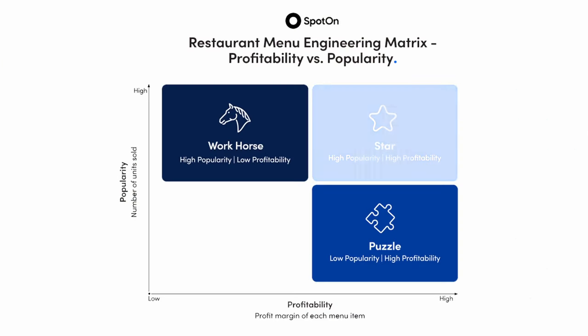And then lastly, don't put more than seven items in any category. Seven is at the high end, but anything more than that is just overwhelming for your guests. Highlight your stars, no more than seven items per category — this includes your sides — and make sure that you're using ingredients in multiple dishes and you'll have a more profitable menu in no time. If you have things you'd like to add or questions about your menu, please drop them in the comments below. I look forward to seeing you next time.